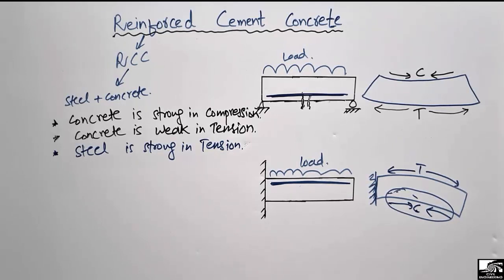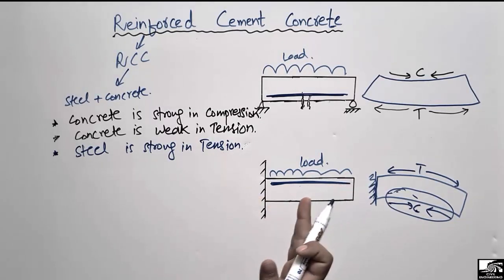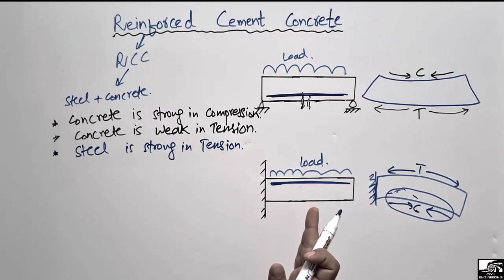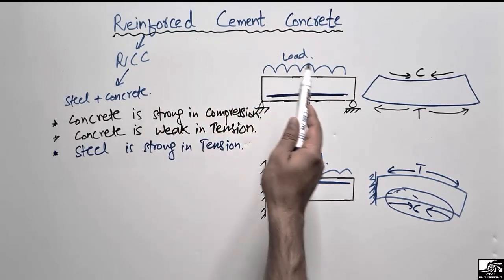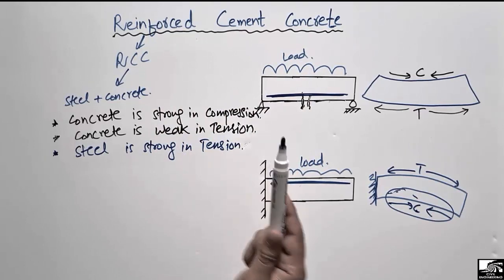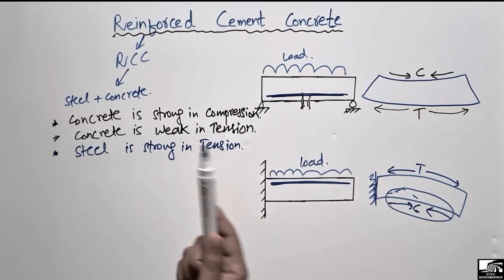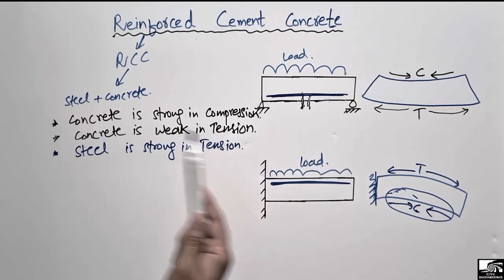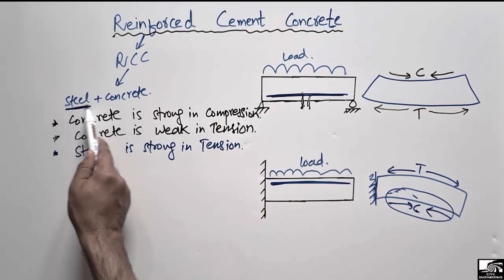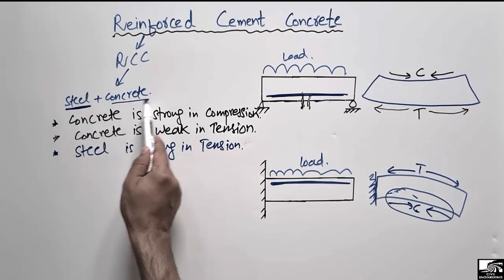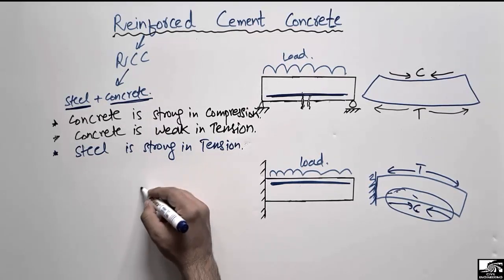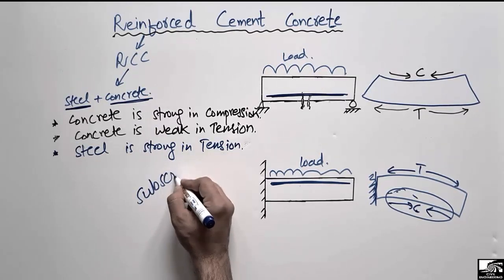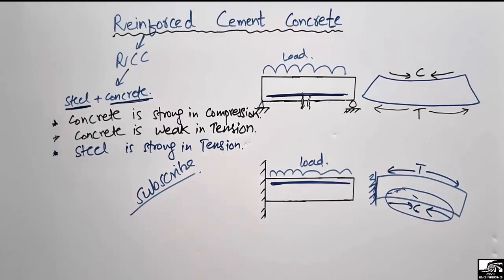The main reason we provide steel bars is at those portions where there is tension in the structural member. Reinforced concrete is most commonly used in structural members because steel provides the tensile capacity and concrete provides the compressive resistance. Hope you guys understand — don't forget to subscribe to our channel. Thank you for watching.